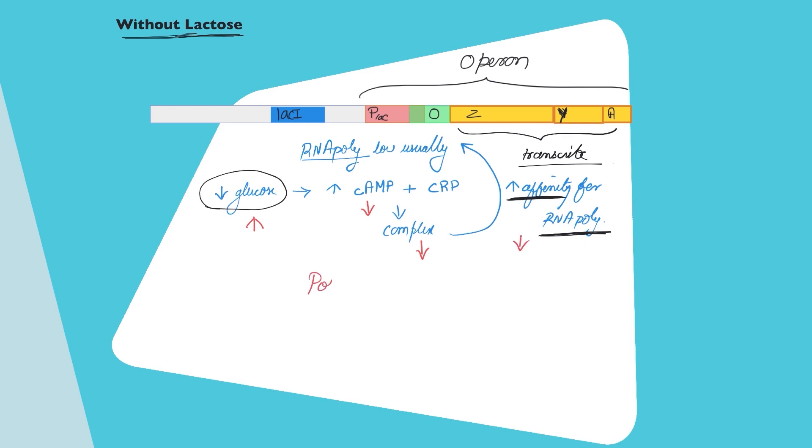This is an example of positive regulation where the binding of cAMP-CRP complex to the DNA increases the affinity for RNA polymerase and hence increases the transcription. We see that the lac operon is controlled by both negative and positive ways, negative by the repressor protein and positively by the cAMP-CRP complex.